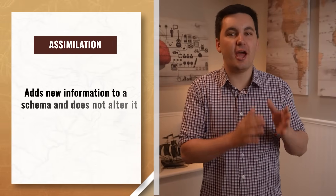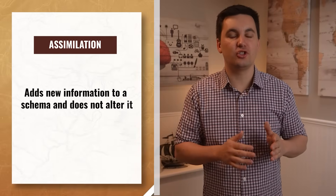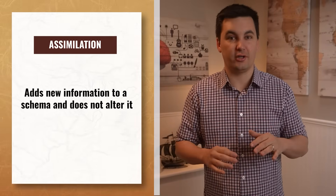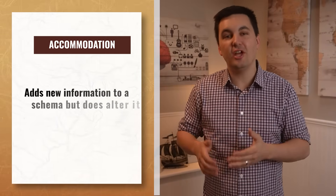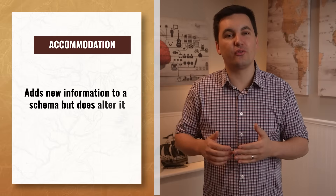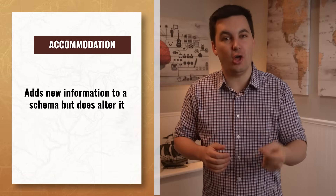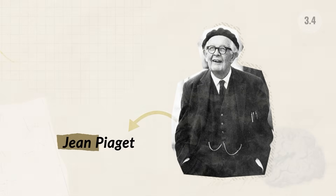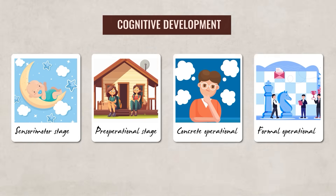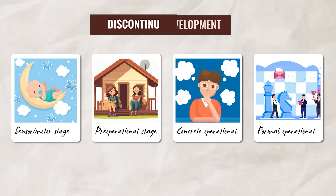Just remember: assimilation adds new information to a schema and does not alter it, while accommodation adds new information to a schema but does alter it. Piaget believed that cognitive development occurred in four main stages, which is an example of discontinuous development.